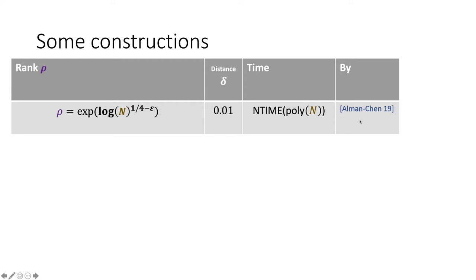So last year, in this conference, Fox, Josh Hallman and Li Jia Chen showed a construction of rigid matrices with rank 2 to the log n to the quarter, constant distance, that's fantastic. I do want us to note that the running time is not polynomial, you can think of this as polynomial with an oracle to NP.